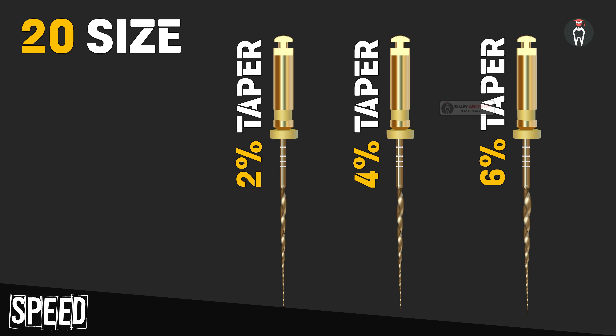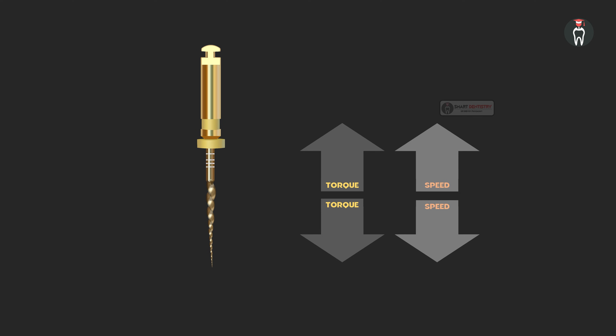Here is a good example. Consider an orifice opener — a file which has a greater taper, is short, and is a bulkier, rigid instrument. What will be your torque and speed settings for such a situation? It is not flexible; it is going to be rigid. So the torque setting has to be higher, and because it is rigid, if rotated at a higher speed it will fracture. So we have to reduce the speed. Any rigid instrument: reduce the speed and increase the torque.